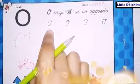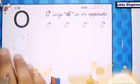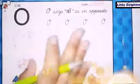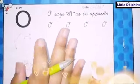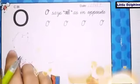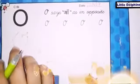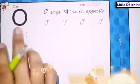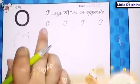As you can see, there are no slanting lines in this letter. But there are curved lines in this letter O.